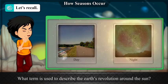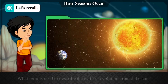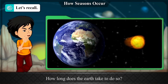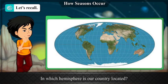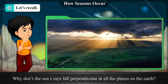What term is used to describe the earth's revolution around the sun? How long does the earth take to do so? In which hemispheres is our country located? Why don't the sun's rays fall perpendicular at all the places on the earth?